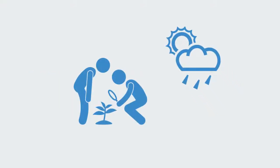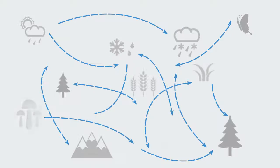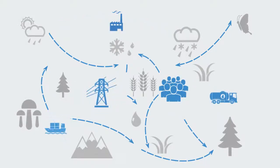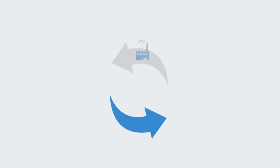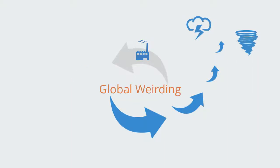Climate change reveals many dimensions to the new reality of the Anthropocene. Through human industrial interventions, the feedback mechanisms that stabilize and regulate Earth's systems have become significantly degraded, both within local ecosystems and increasingly on the global level. The breaking of these stabilizing negative feedback loops increases destabilizing positive feedback that makes the system more unstable, thus generating more extreme events — what scientists call global weirding.